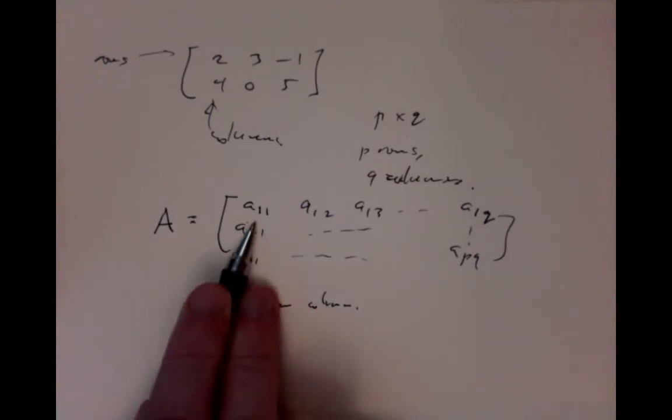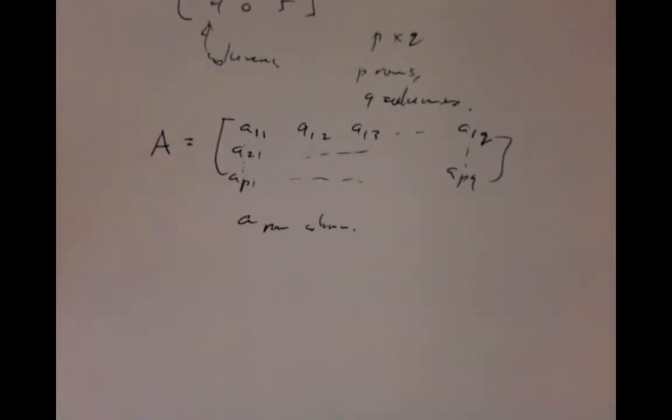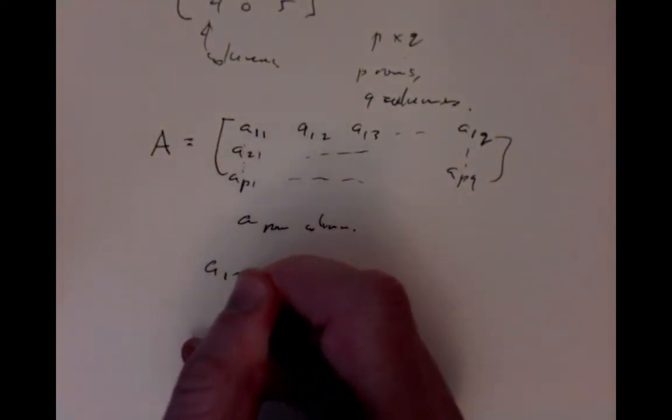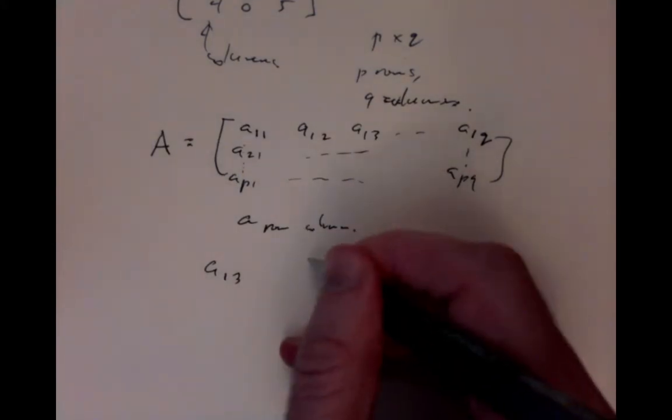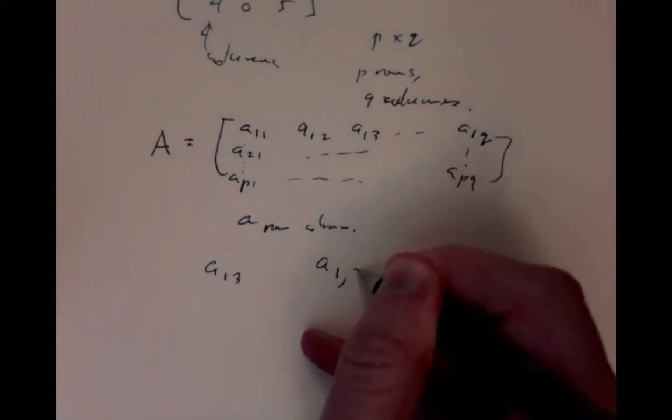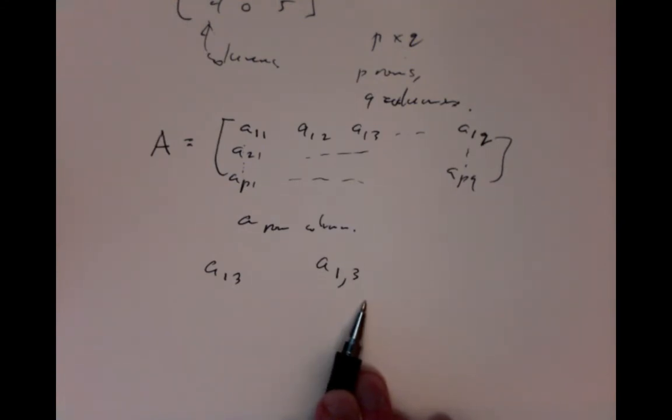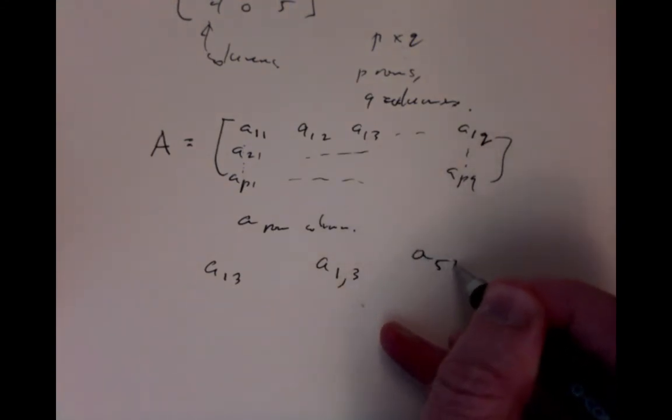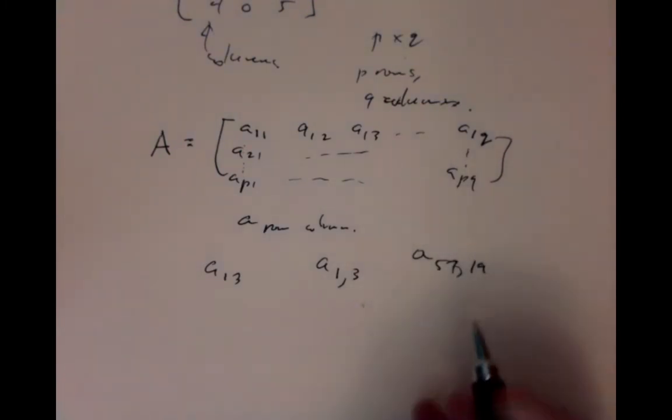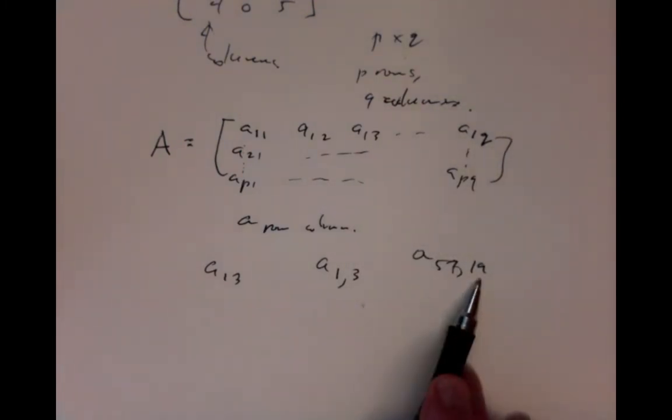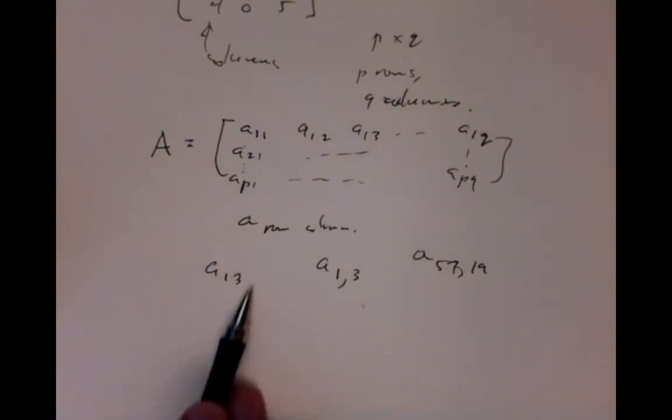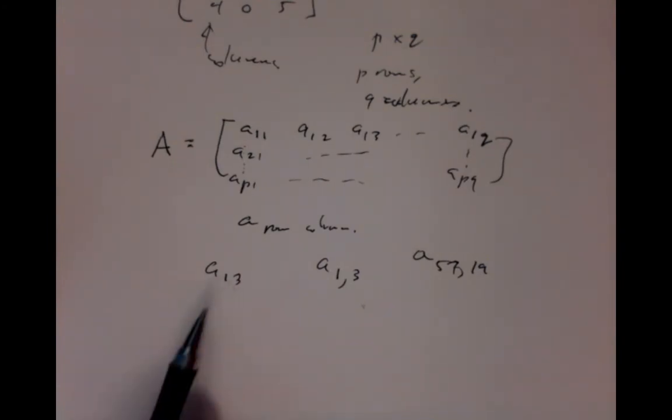Usually we have fewer than 10 entries. So when I write a13, that doesn't mean a times 13. We could write it as 1 comma 3. And if we had to have a matrix with enormously many entries, we could write a57,19 to indicate that it's row 57 column 19. But we never will do that. All of our matrices are very small. So there's no danger if it's only one digit for each of the row and the column.